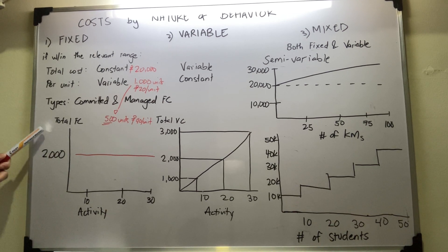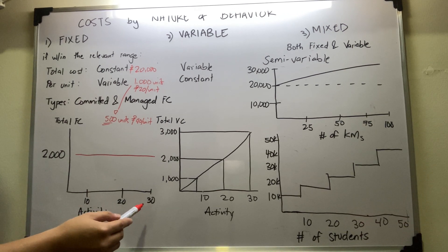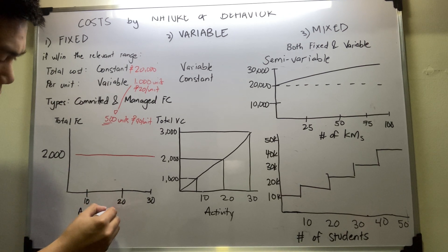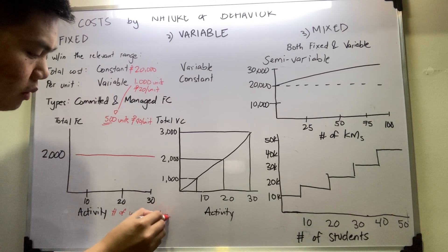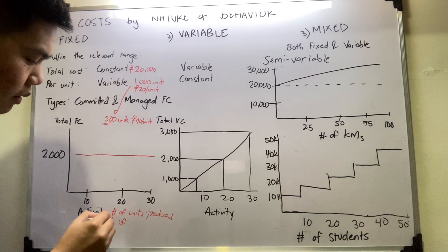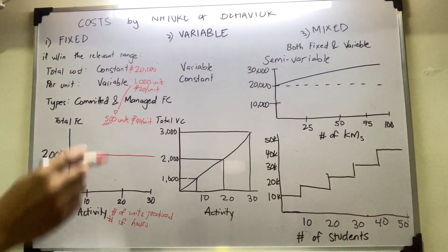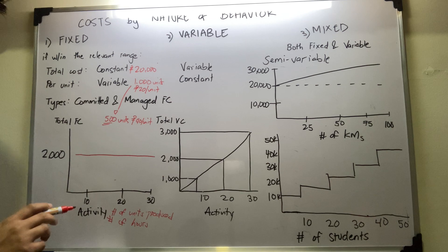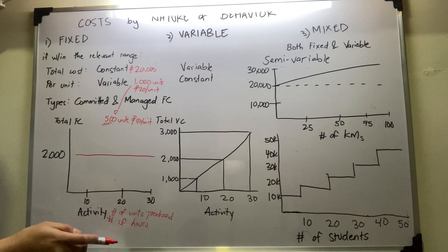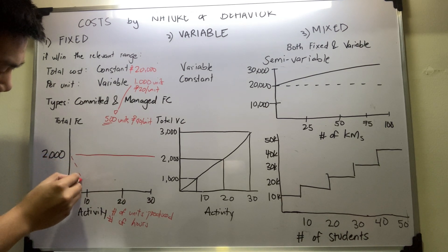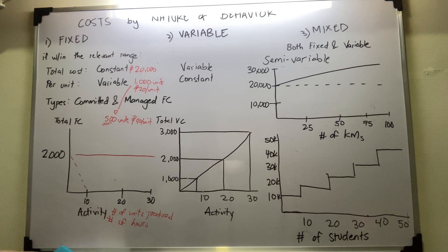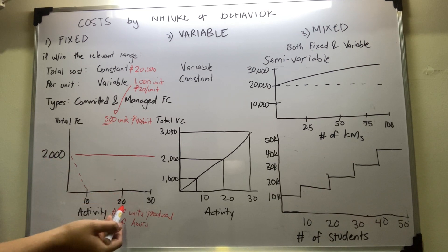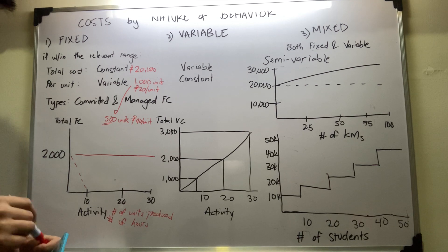Looking at the diagram, whatever the activity — whether number of units produced or number of hours — the total fixed cost would be constant. But the per unit cost will differentiate. For example, with a 2,000 pesos fixed cost and only 10 units of activity, the fixed cost per unit is 200 pesos. With 20 units produced, you get 100 pesos fixed cost per unit. That's the concept for fixed cost.